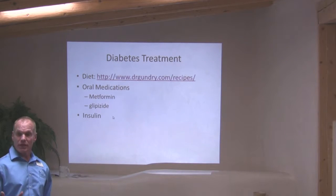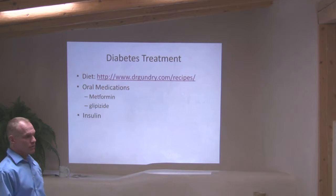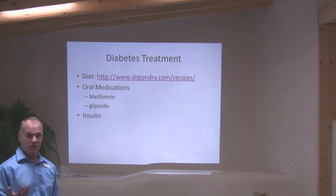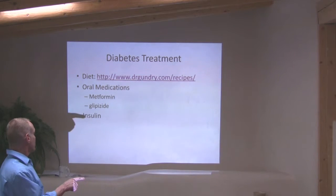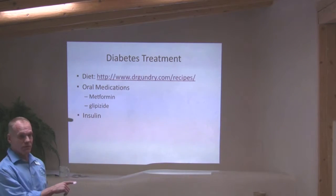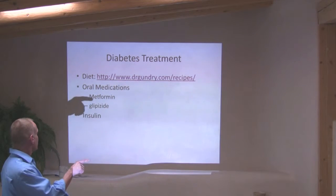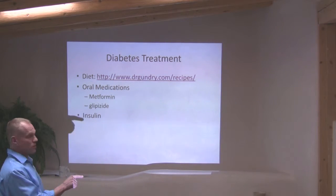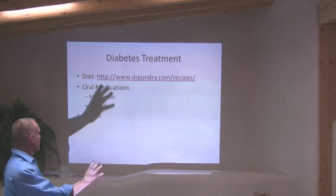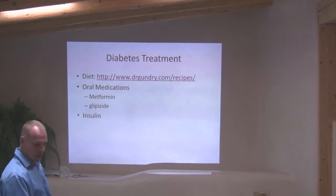There are other medications. Metformin is a really safe medication. Glipizide is a sulfonylurea, which is much less safe. And then there's insulin, which will kill you if given in the wrong dose. Metformin won't kill you; glipizide can; insulin will. Tight sugar control is one of the keys.